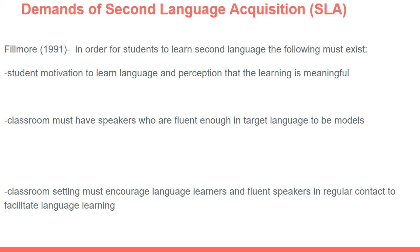In many ways, the best bilingual programs are the 50-50 dual language model, where half the class are native English speakers and the other half are native speakers of a minority language like Spanish. Both students benefit from having role models who are more fluent in each language. Native English speakers learn Spanish as their second language, and native Spanish speakers learn English as their second language, so both end up becoming bilingual. The native Spanish speakers actually develop English at a faster pace than in all-English monolingual classrooms.